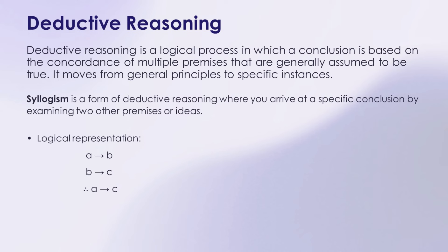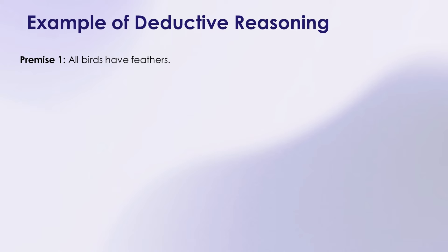It's a step-by-step process that ensures our conclusion is based on solid reasoning. This is also related to the transitive property of equality in mathematics. For instance, if A equals B and B equals C, then A equals C. These logical steps are fundamental in making sure our reasoning is sound.